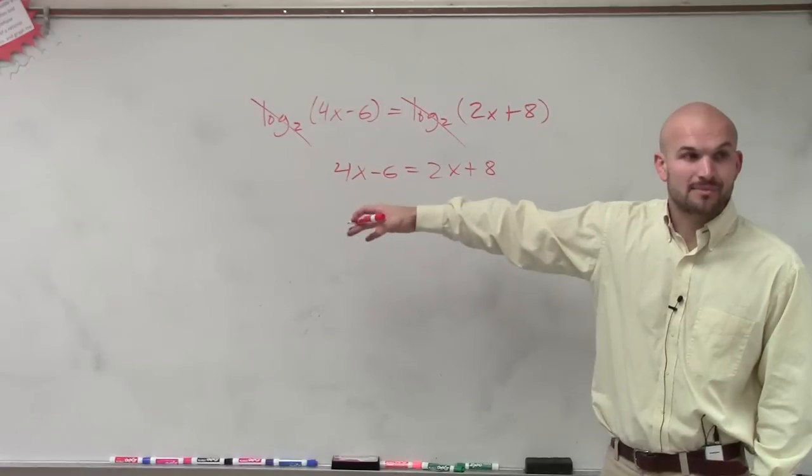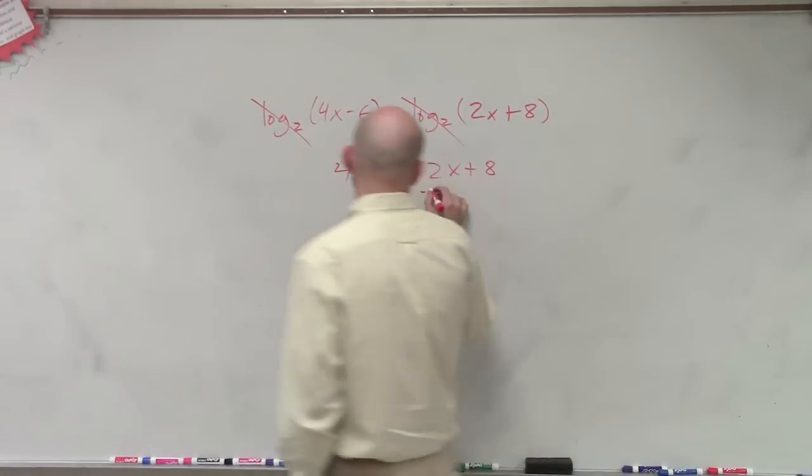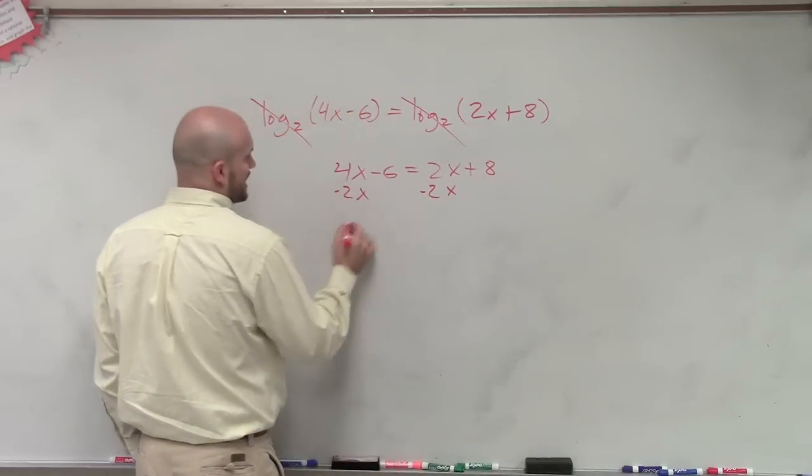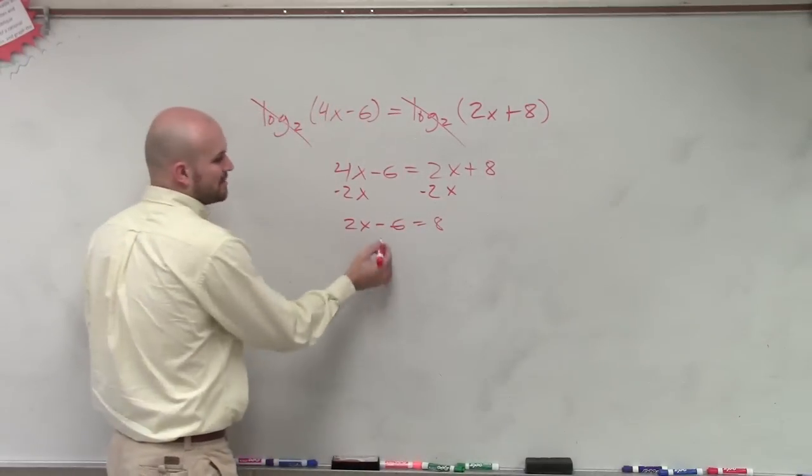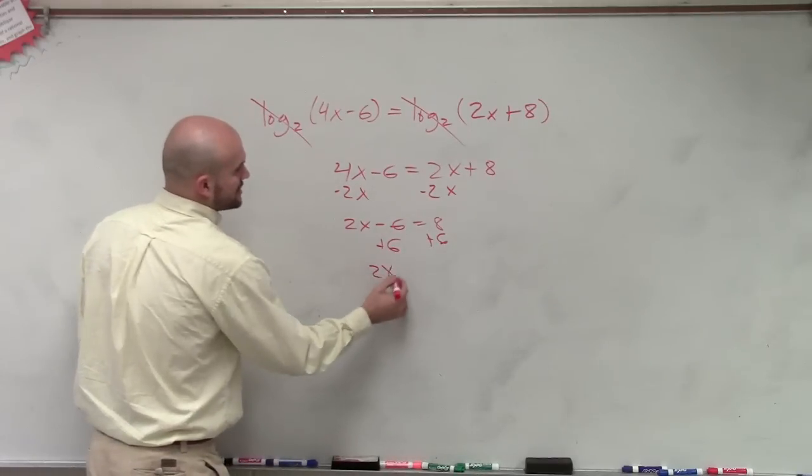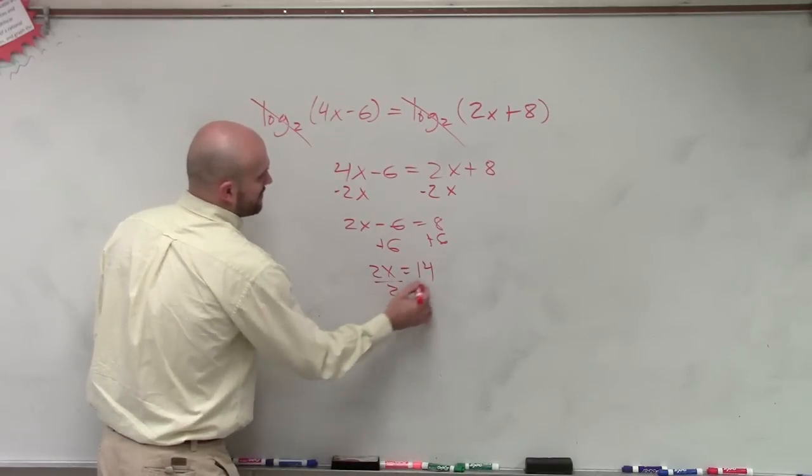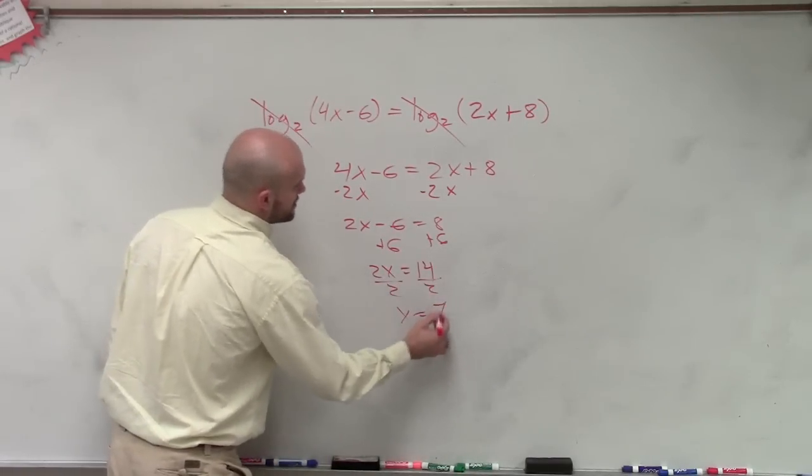So all I need to do, I can combine them on the same side. So what I'll do, Cody, is I'll subtract the 2x on both sides. I get 2x minus 6 equals 8. Now I isolate the variable by adding 6 to both sides. So I get 2x equals 14, divide by 2, x equals 7.